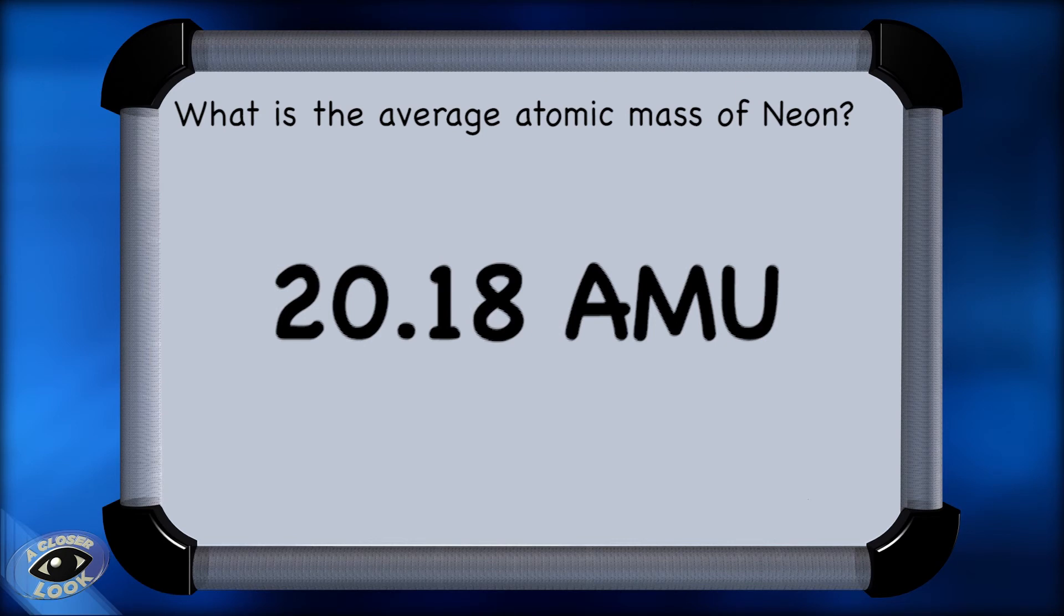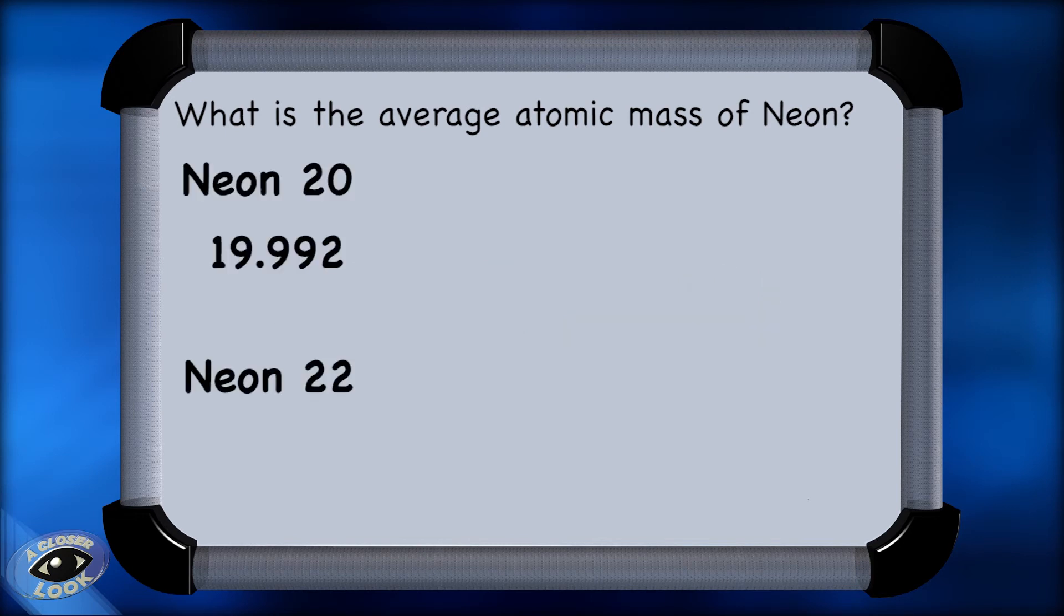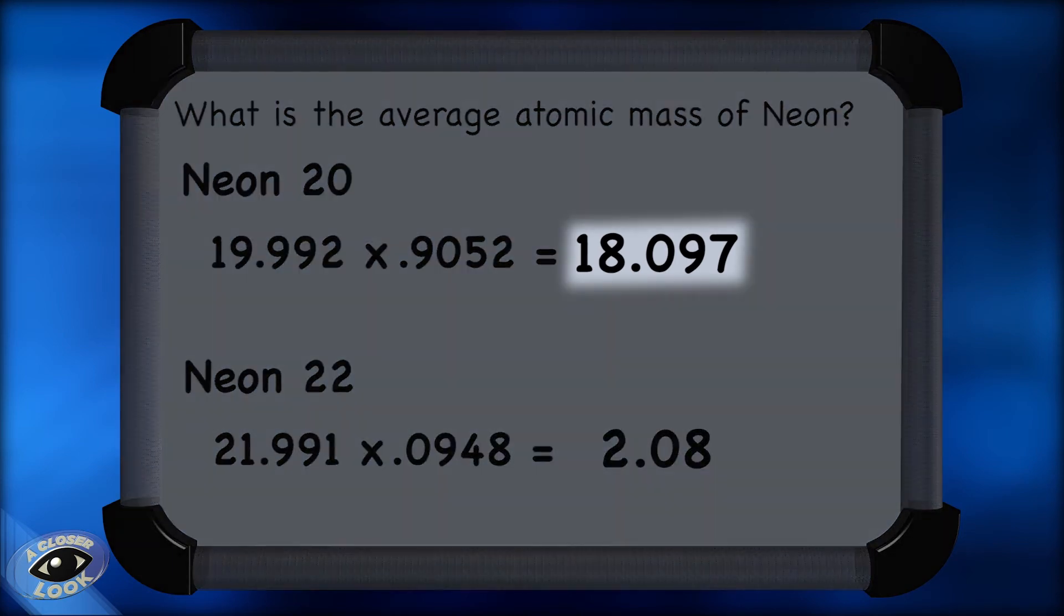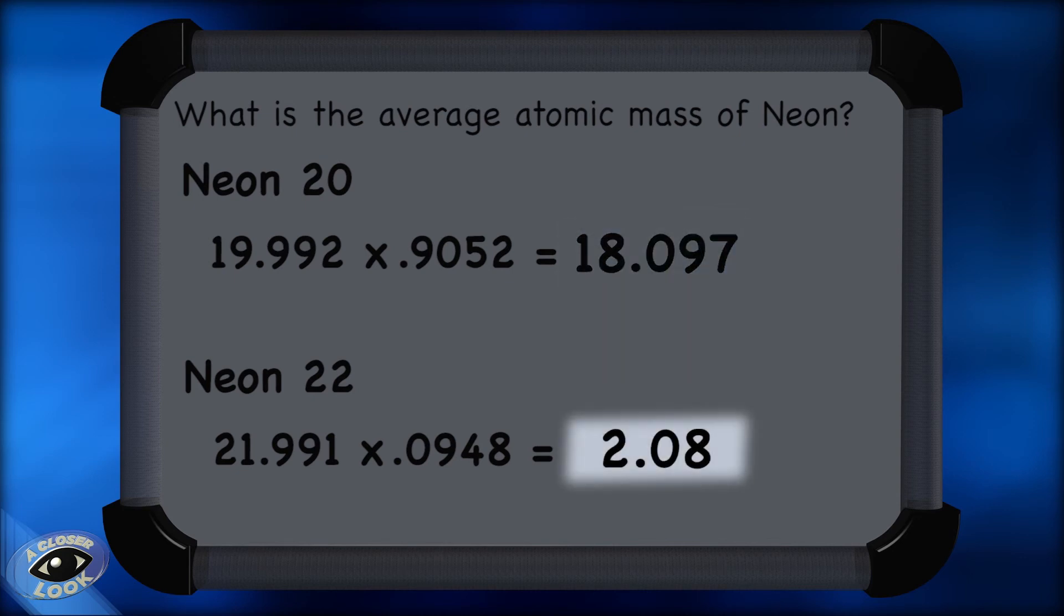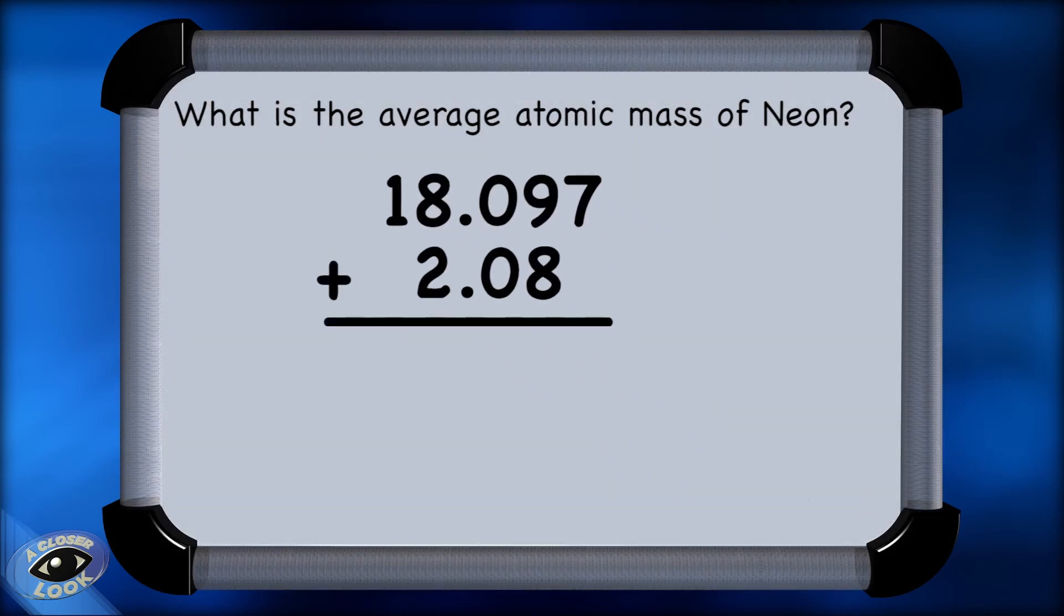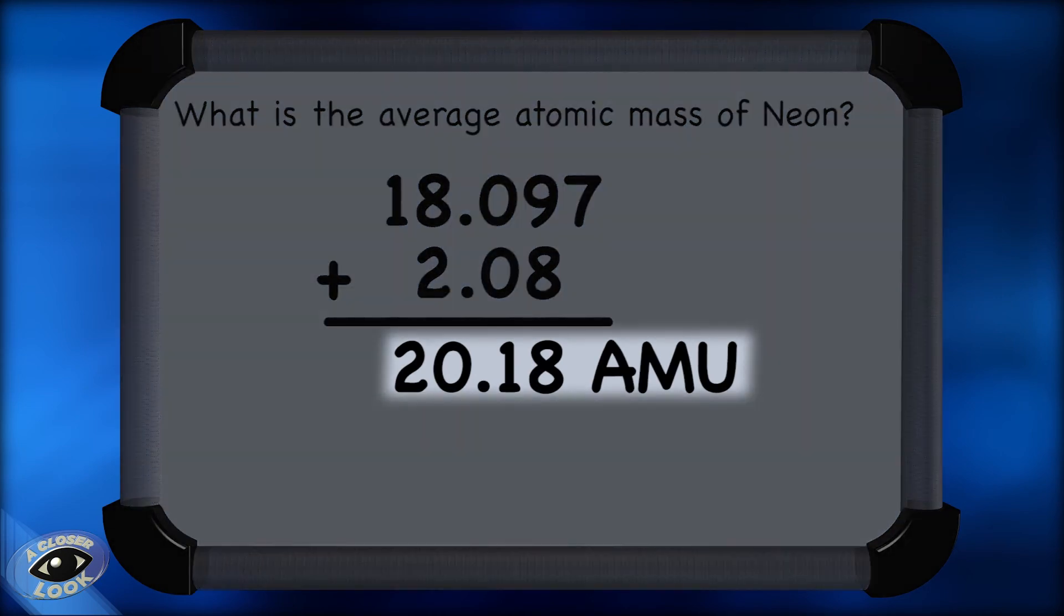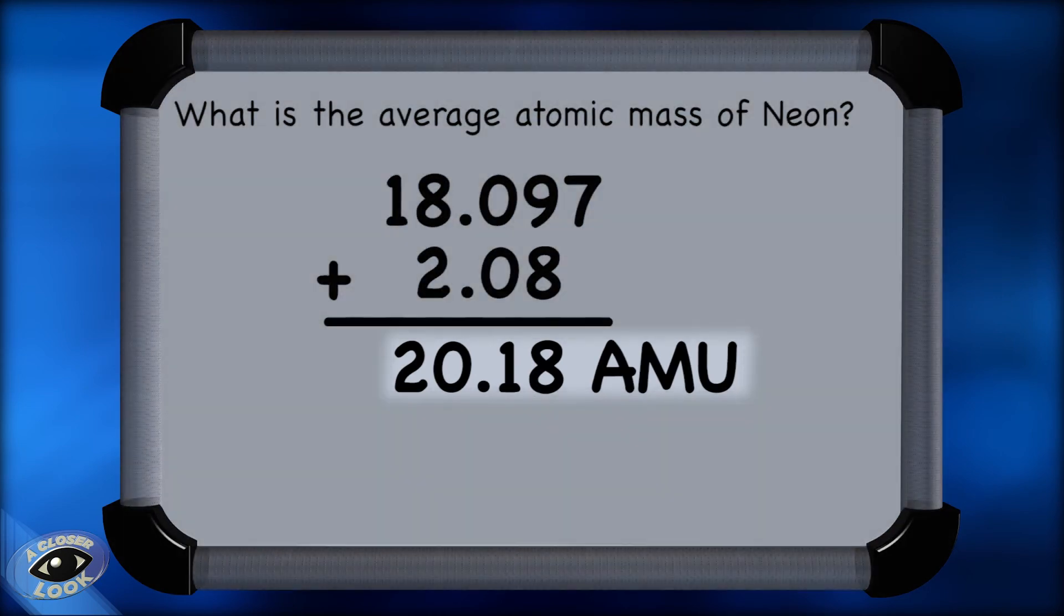If not, here's a refresher on how we get there. We take the exact mass times the abundance for each isotope. We get 18.097 for the mass contribution from neon-20, and 2.08 was the mass contribution from neon-22. And when we take those two numbers and add them together, we get the average atomic mass for neon, which is 20.18 AMU.